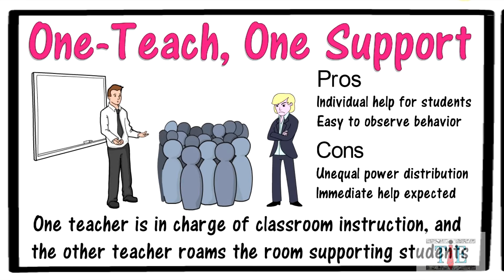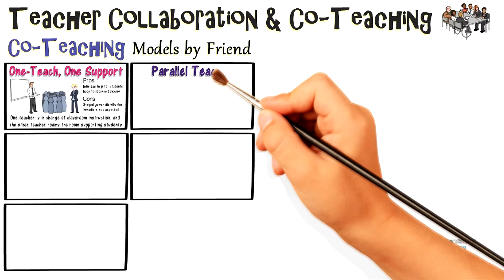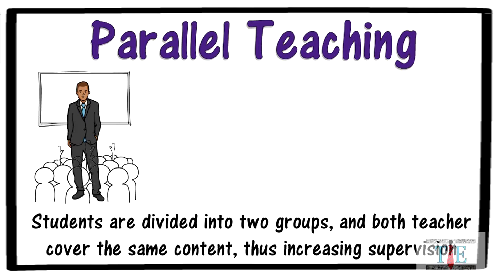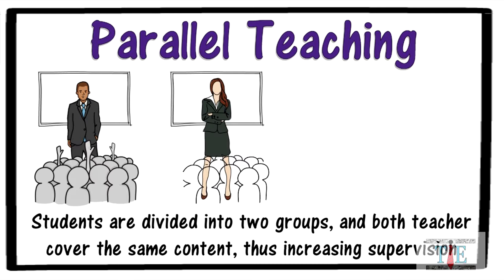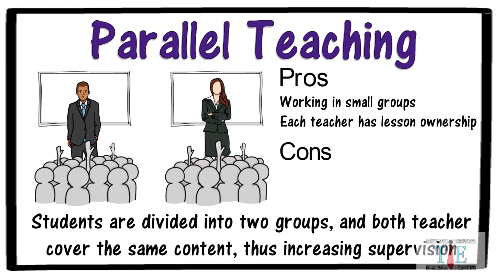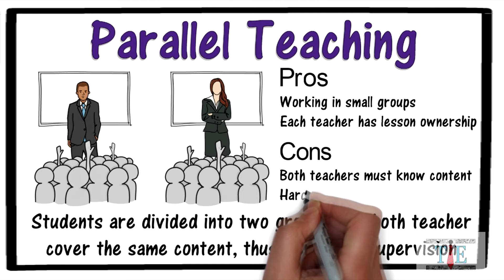The next model is Parallel Teaching. Students are divided into two groups and both teachers cover the same content, thus increasing supervision. Visually, one teacher is in charge of one half of the room, and the other teacher is in charge of the other half. The pros are you can work in small groups and each teacher has lesson ownership. The cons are both teachers must know the content, and it can be hard to control the noise.